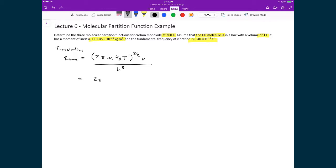We have 2π. In this case, the mass of carbon monoxide - if we go to our periodic table, carbon has a mass of 12.0107 AMUs, oxygen has a mass of 15.999 AMUs. And each AMU is 1.66 times 10 to the minus 27 kilograms. So there's the mass of carbon monoxide. We multiply that by the Boltzmann constant, 1.381 times 10 to the minus 23, and multiply that by the temperature, 300 Kelvin.